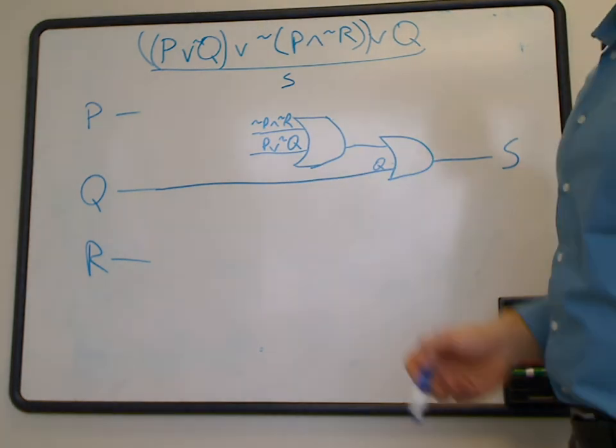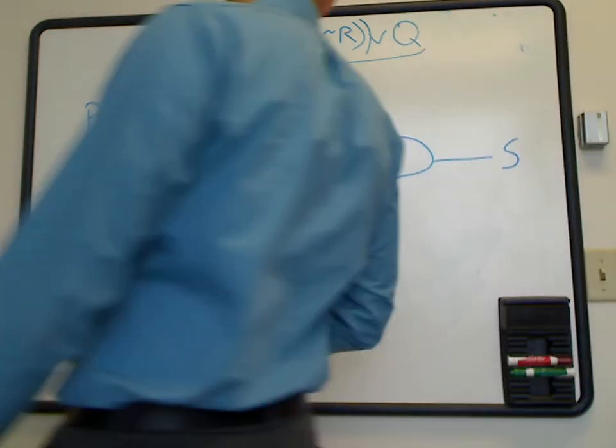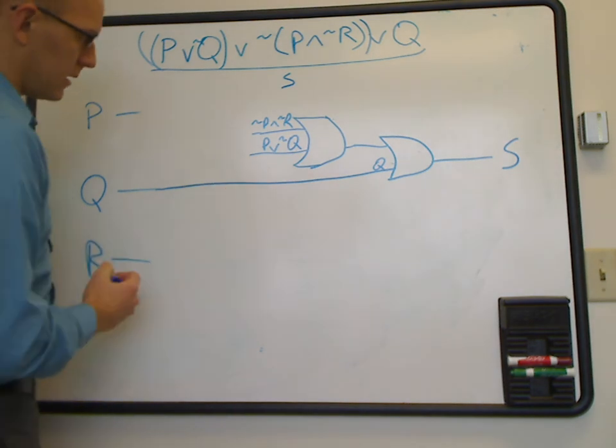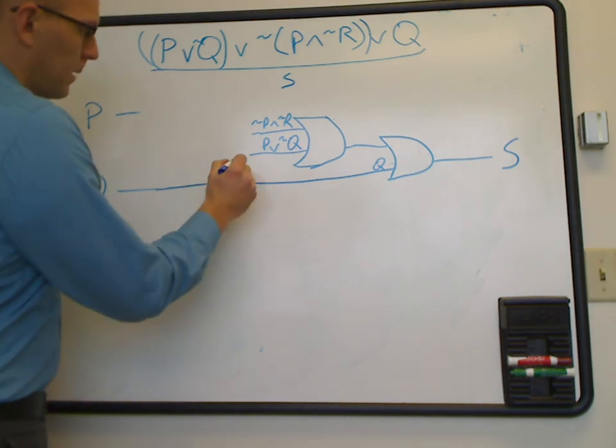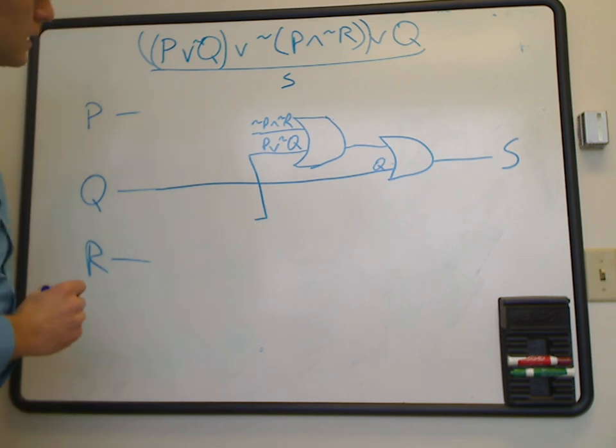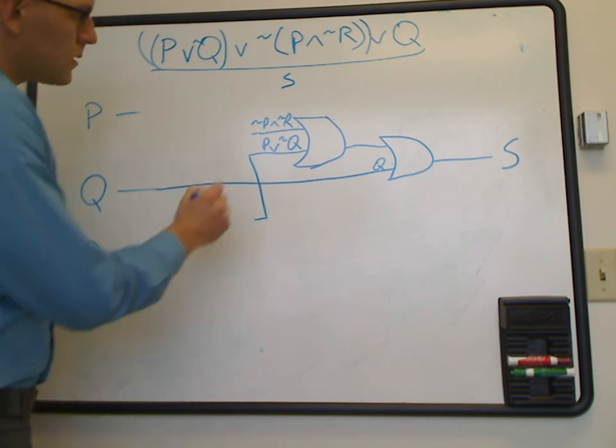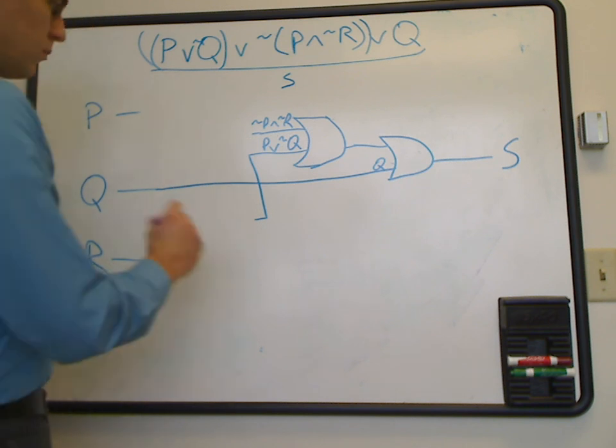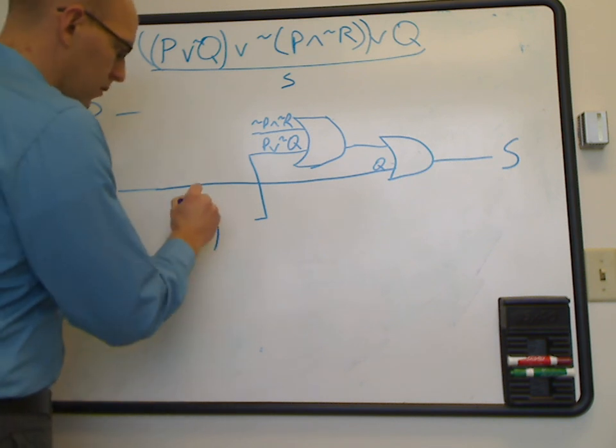So to build these, we're going to build these in the same way we've built other ones. Let's take the bottom one first. In fact, let's move that down here so we've got a little bit more space. So p OR not q, we know we have an OR symbol. Let's go ahead and make an OR symbol.